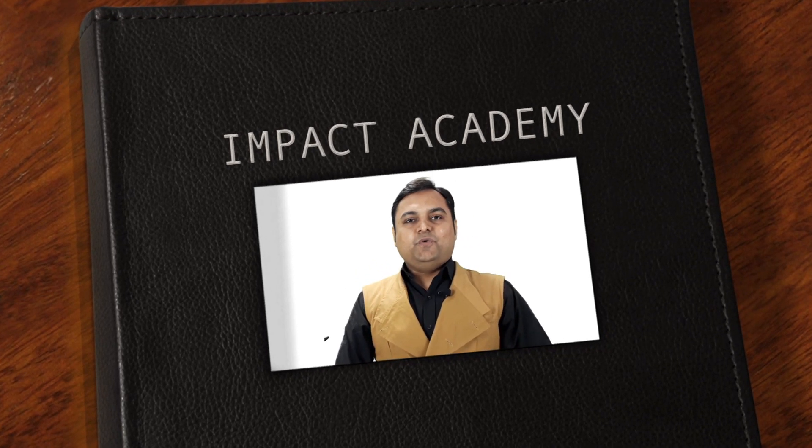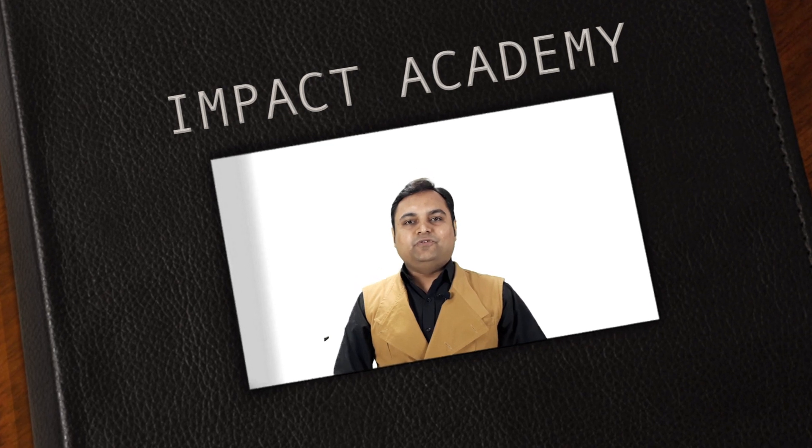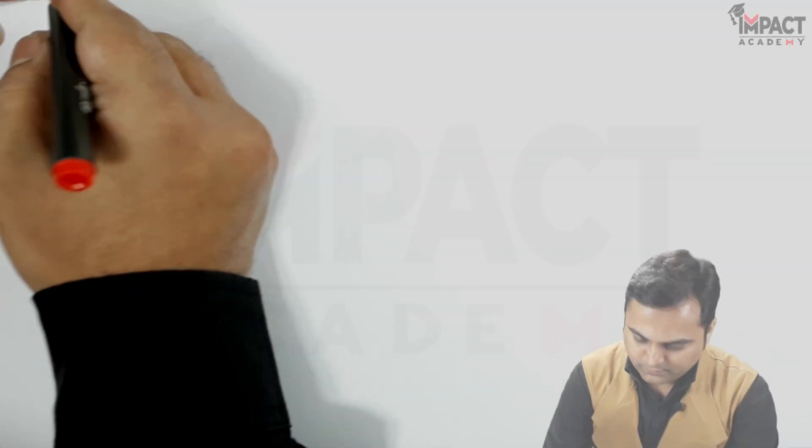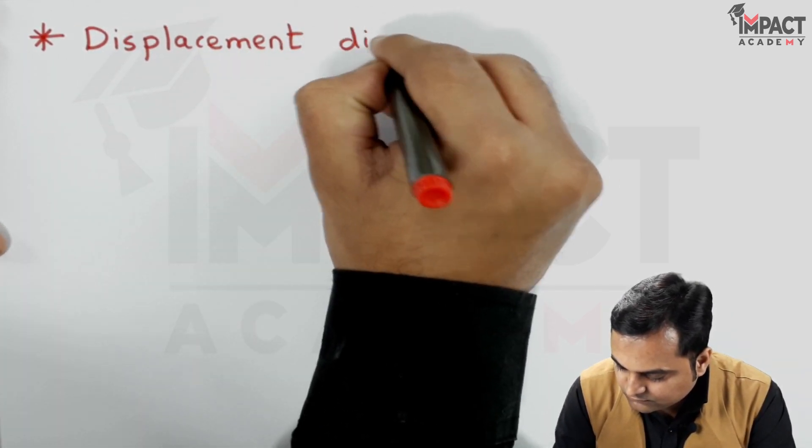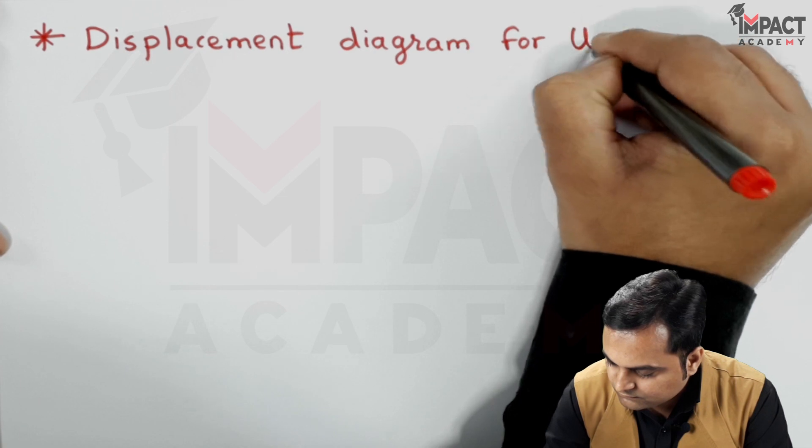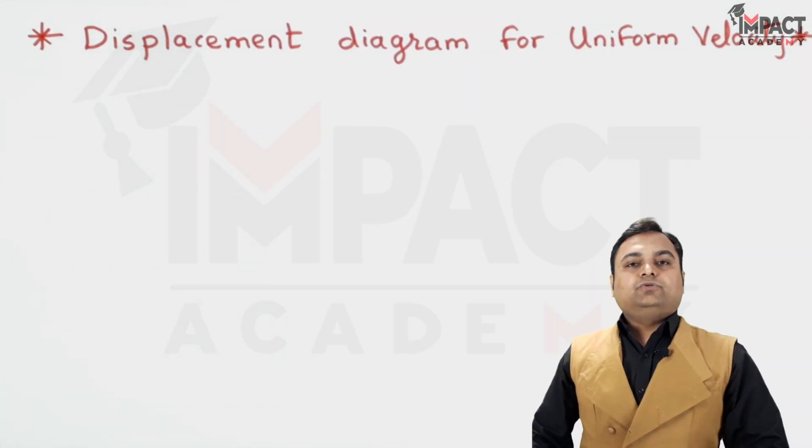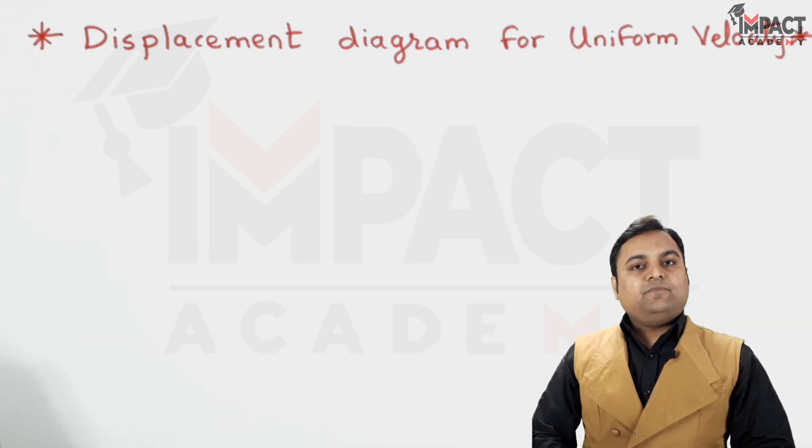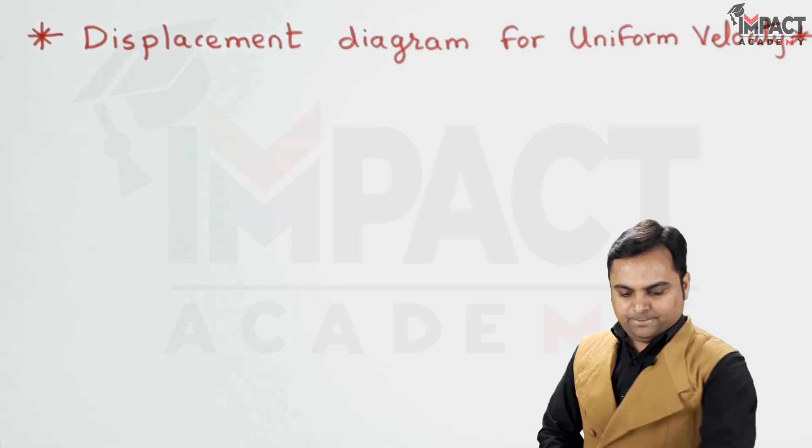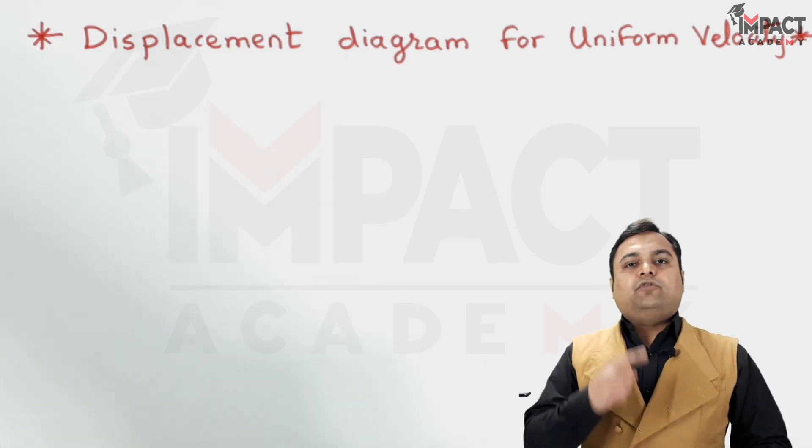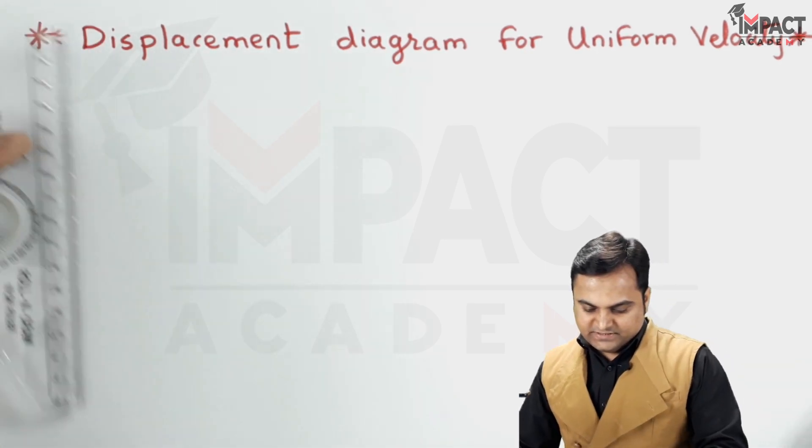Hi friends, here in this video we are going to see the displacement diagram for uniform velocity. So let's get started. Now in order to draw the displacement diagram for uniform velocity, I would be assuming some data. For example, I'll take the height of follower travel here and that height I am assuming it to be 6 centimeters.